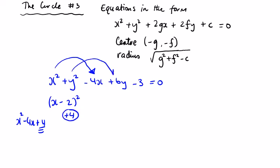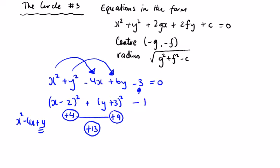Similarly with y squared and 6y, we need (y plus 3) squared to get y squared plus 6y plus 9. That plus 9 we don't want either. So in total I've brought in plus 13, but I actually want minus 3. To get from plus 13 back to minus 3, I take away 16. Instead of writing take away 16, we bring the 16 across and write equals 16. That's the method I like for these questions — it eliminates the need to use the formulas.